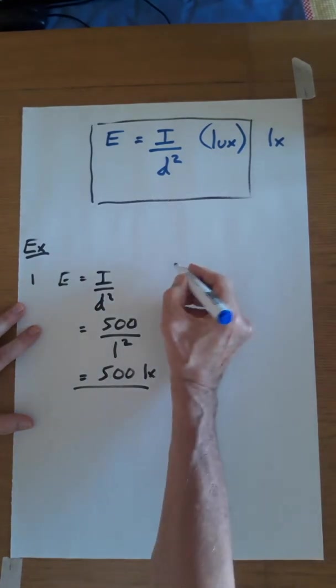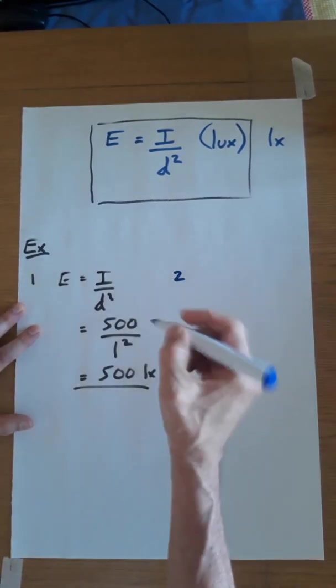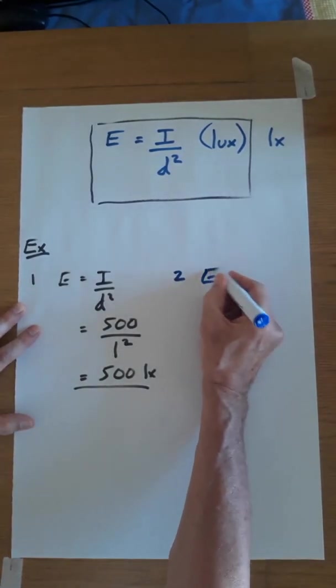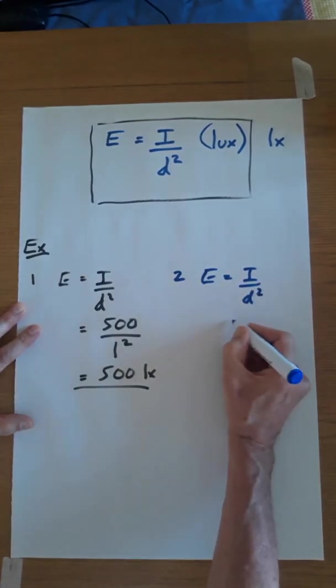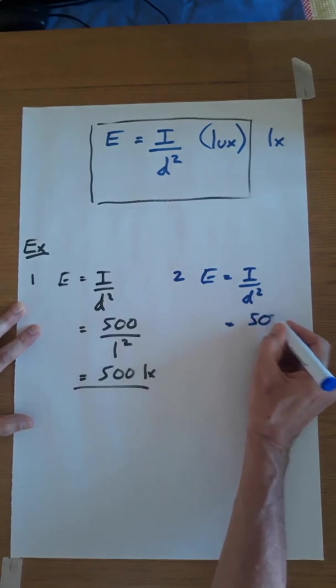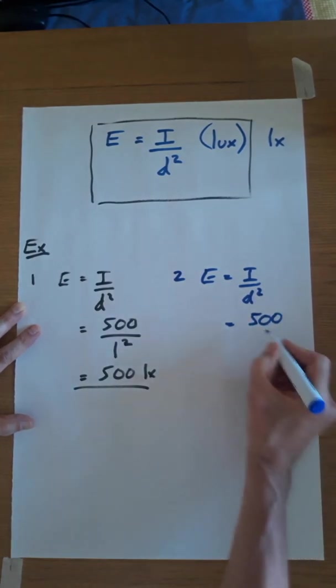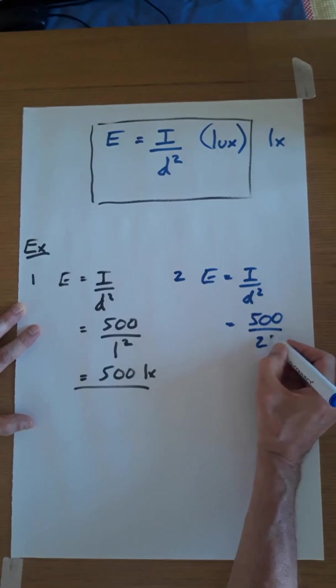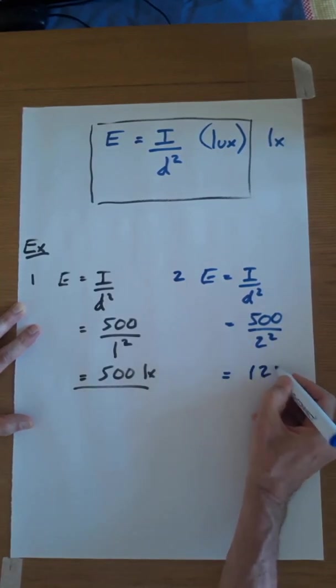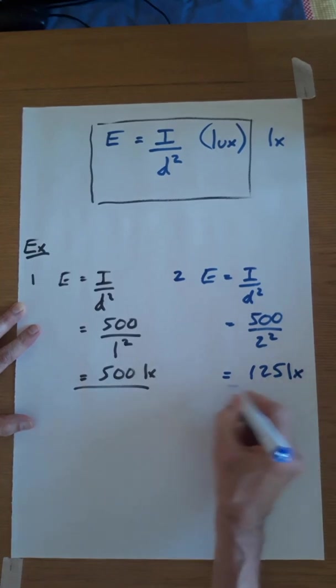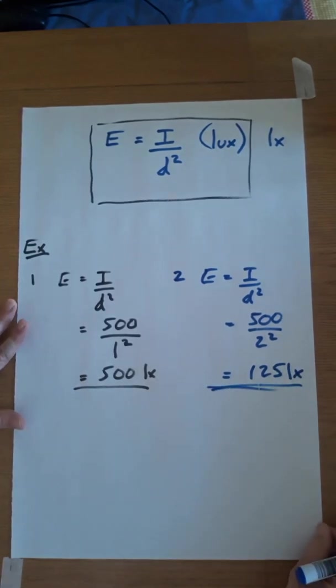So in example two we take exactly the same light but we change the distance to 2 metres. So 500 was the intensity of the lamp and it's 2 squared. That is now 125 LUX is the illumination of the surface.